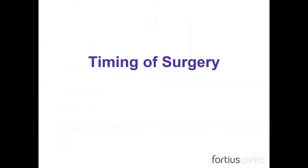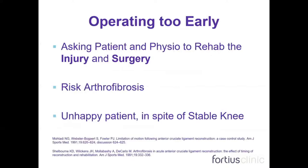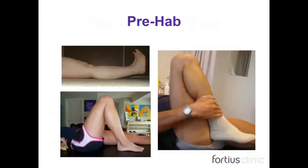In terms of timing of surgery, surgery can be too early or too late. While there is a role for acute surgery, in the context of acute ACL reconstruction, one is asking the patient and physios to rehabilitate both the index injury and the surgical insult — a second hit. There is a risk of arthrofibrosis and a potential risk of an unhappy, dissatisfied patient despite a stable knee. For this reason, I insist on all acute ACLs undergoing a course of prehab — appropriate physiotherapy rehabilitation aiming to abolish the knee effusion, regain terminal range including hyperextension, achieve good quadriceps activation, and mobilize without walking aids with a normal gait.